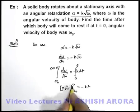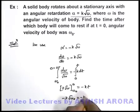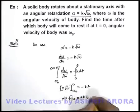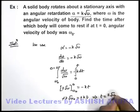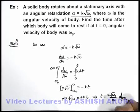On solving, if we just substitute the limits, we'll get minus 2 root ω₀ equals minus k t, and this will give us the time after which the body will come to rest is 2 root ω₀ divided by k. That is the answer to this problem.